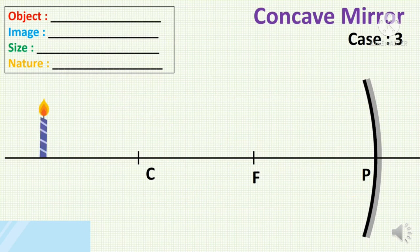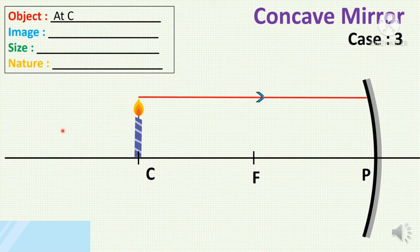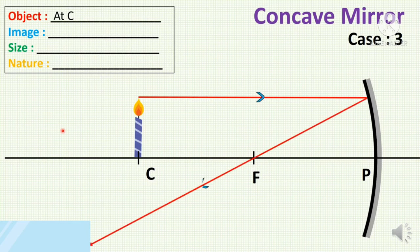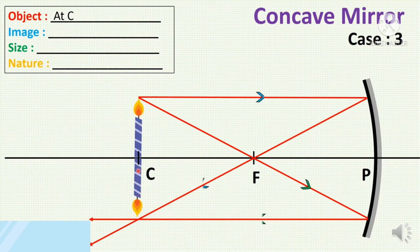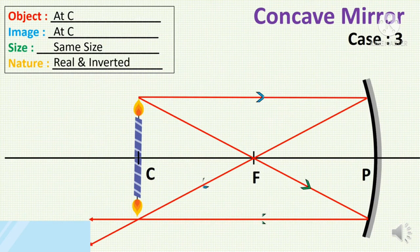Case 3: when the object lies at the center of curvature. Consider a ray from the top of the object parallel to the principal axis — after reflection from the mirror, it passes through the focus. Another ray from the top of the object passes through the focus and becomes parallel to the principal axis after reflection. The two reflected rays meet at a point lying exactly at the center of curvature, so the image is formed at C. The size is the same as the object, and since there is actual intersection of reflected rays, the image is real and inverted.